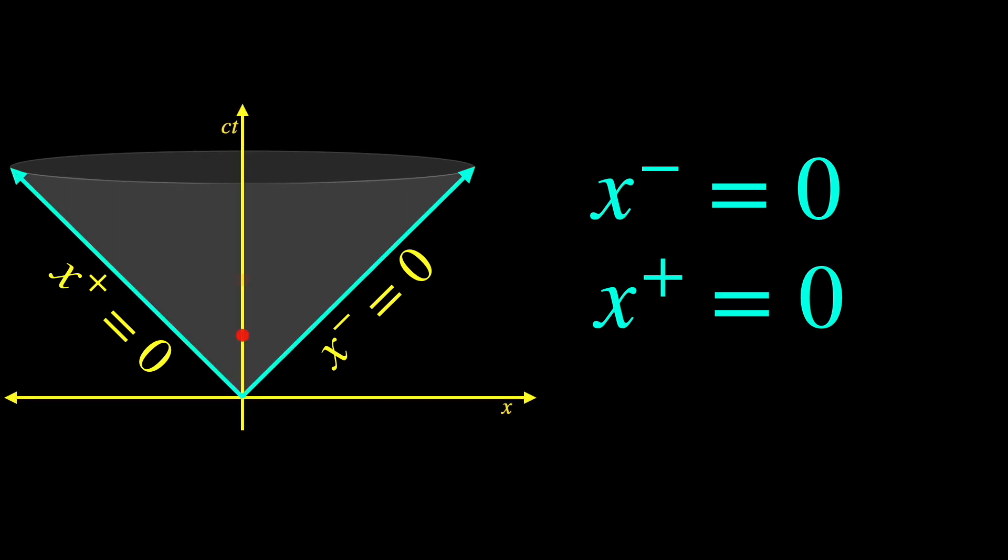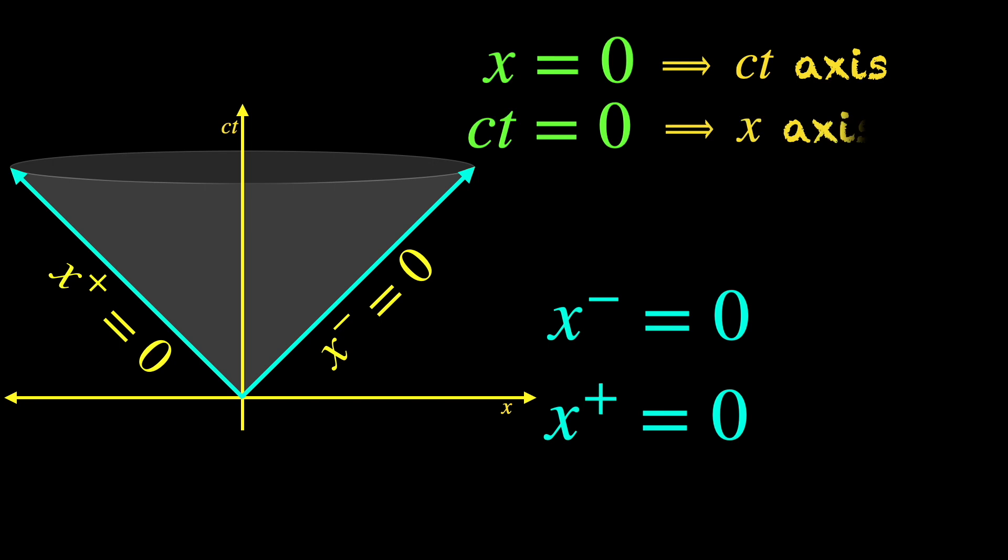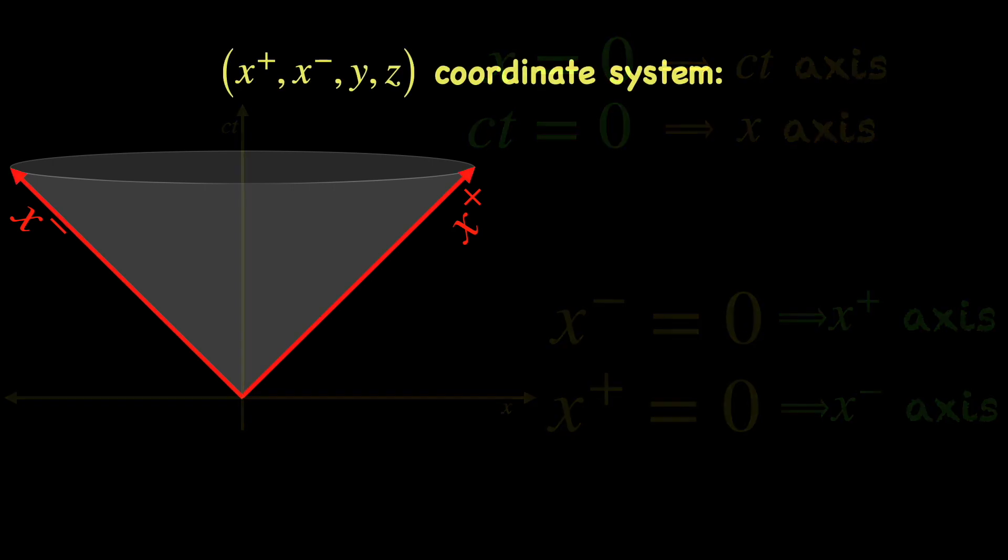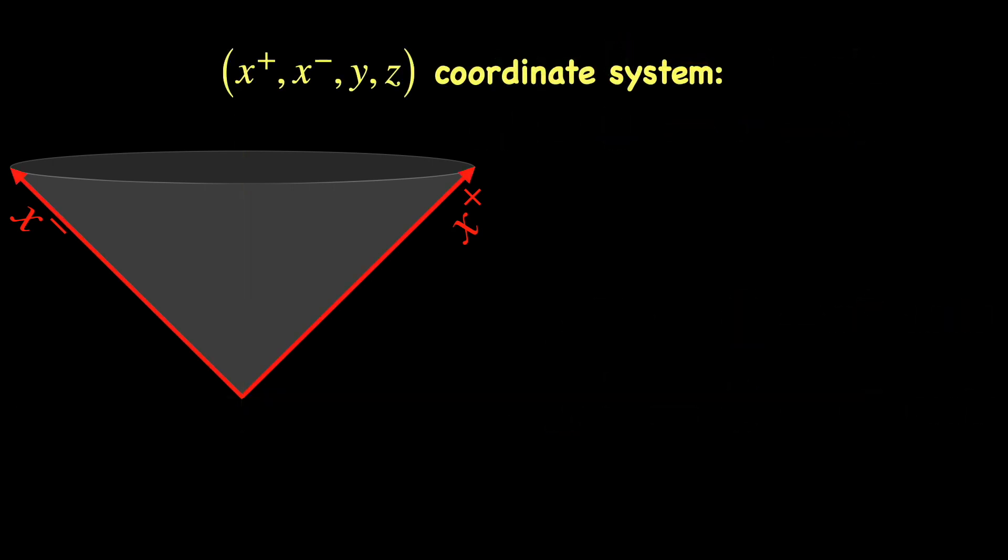Now, think of all the events on the time axis or ct axis. They are all located at the spatial origin, so the equation x equals 0 represents the time axis. On the other hand, all events on the x axis occurred simultaneously when we started our clock at t equals 0, so the equation ct equals 0 represents the x axis. Basically, x equals 0 is the equation for the time axis and ct equals 0 is that for the space axis. Exactly in the same manner, x minus equals 0 line represents the x plus axis and x plus equals 0 line represents the x minus axis. So in the x minus, x plus, y, z coordinate system, the x minus and x plus are coordinate variables which vary along the two arms of the light cone, and hence the name light cone coordinates.